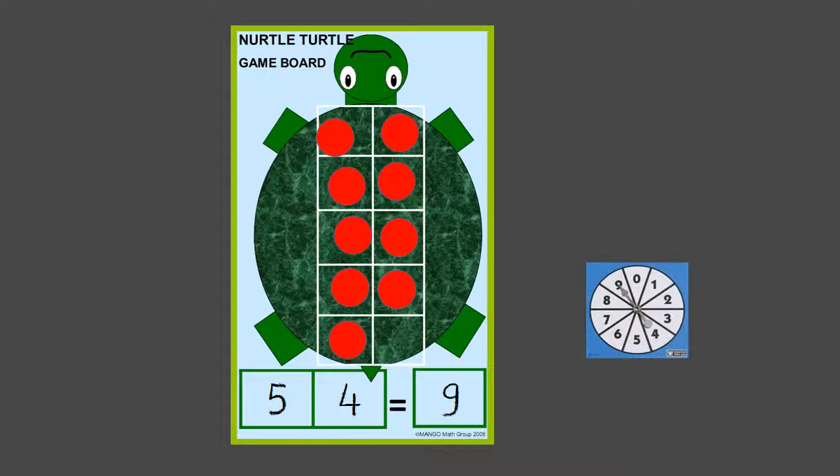Then you'll ask if they can do it any other way, and they can see that they can move one counter over. They now have four in one column and five in another column for nine.